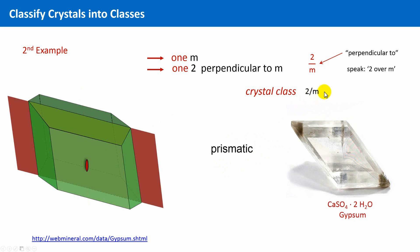2 over m is another crystal class, and this class is also called prismatic. Gypsum, which is calcium sulfide dihydrate, for instance, belongs to this crystal class. Here a beautiful, very clear sample of gypsum with this typical prismatic shape is shown.